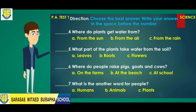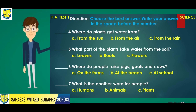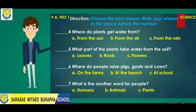Number seven: What is the other name for people? A. Humans. B. Animals. Or C. Plants.